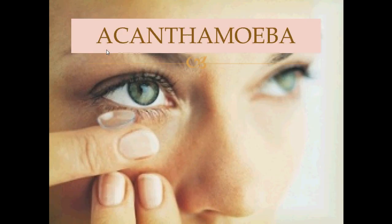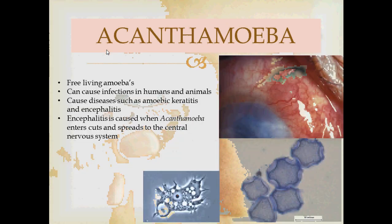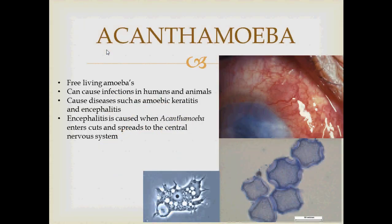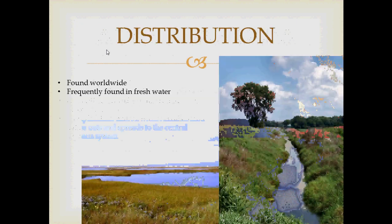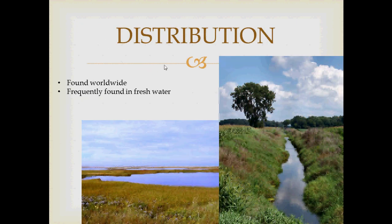Hello everybody, today we're going to look at Acanthamoeba. Acanthamoeba are free-living amoebas that can cause infections in humans and animals, causing diseases such as amoebic keratitis and encephalitis. Encephalitis is caused when Acanthamoeba enters cuts and spreads or disseminates to the central nervous system. Acanthamoeba are found worldwide and frequently found in fresh water.